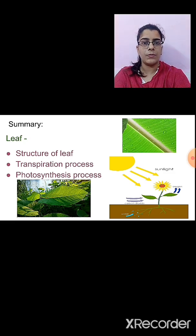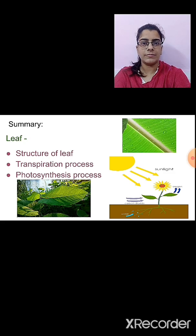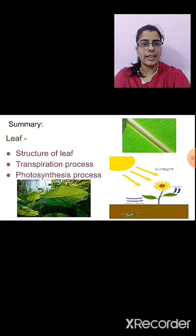We have seen two different types of leaf venation. First, reticulate venation — when we see an irregular or net-like design of the veins on the leaf, such venation is known as reticulate venation. And if the veins are arranged parallel to each other, such type of venation is known as parallel venation.